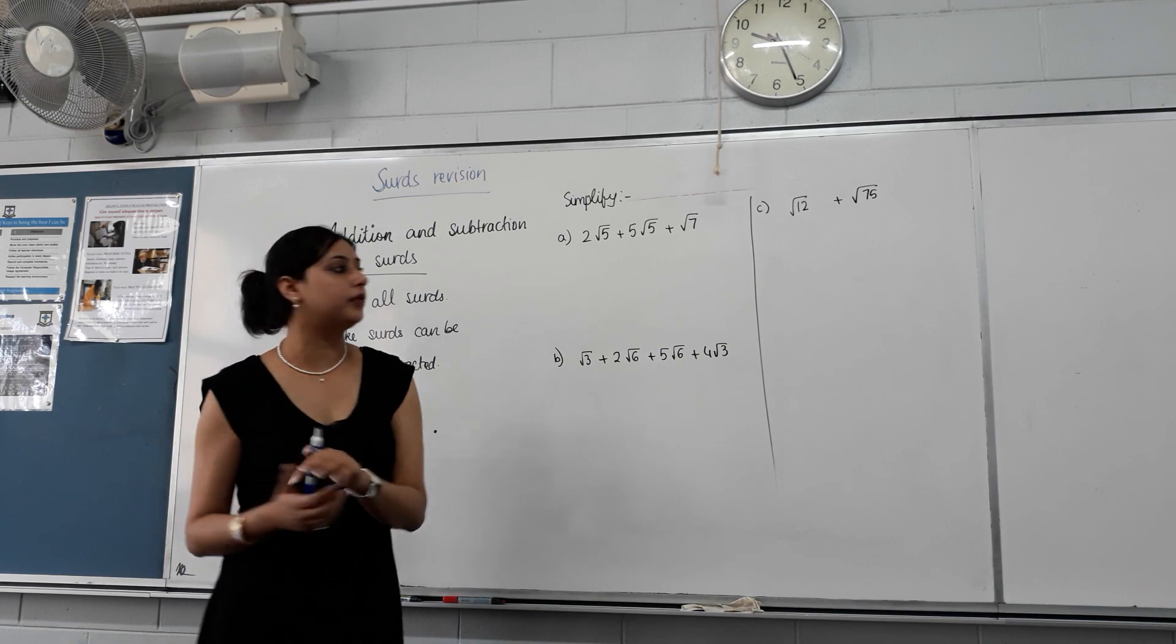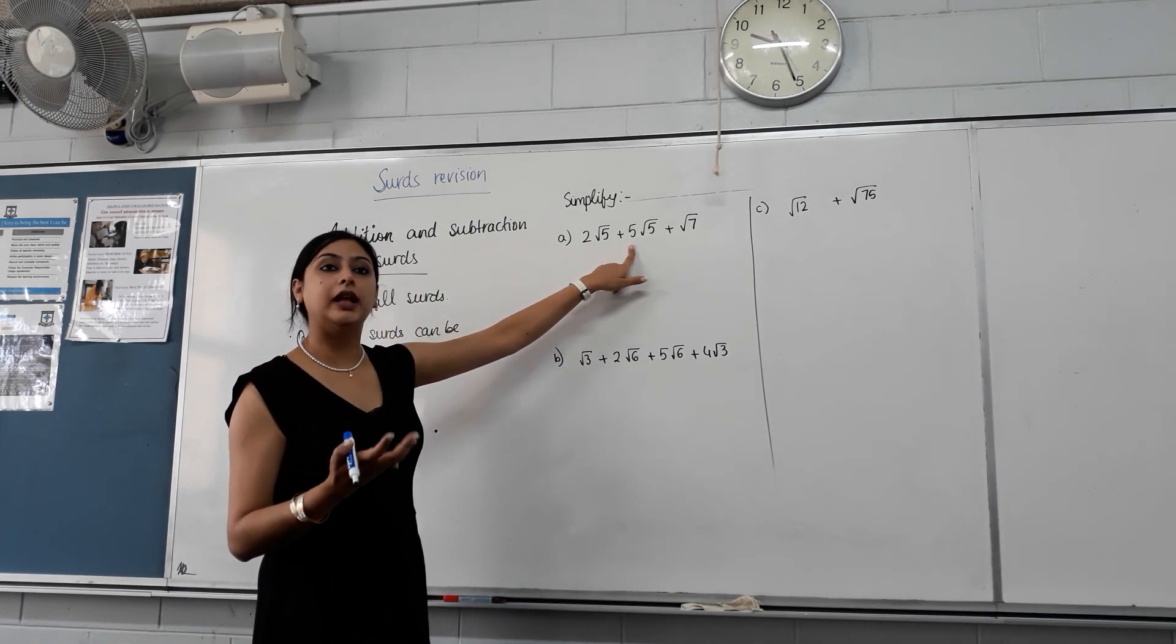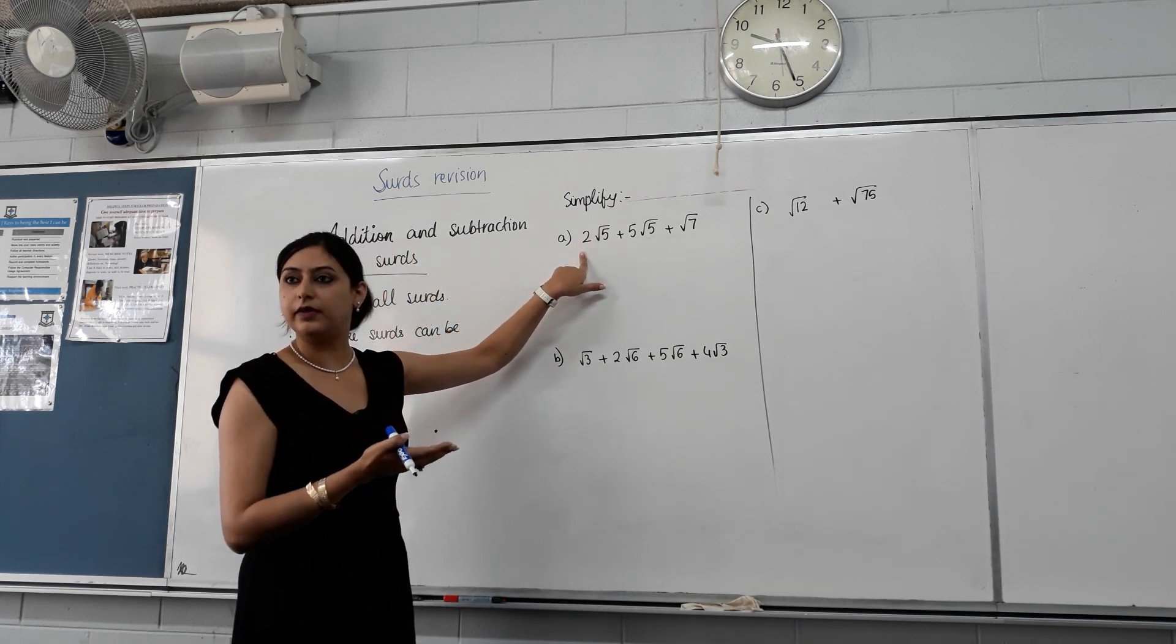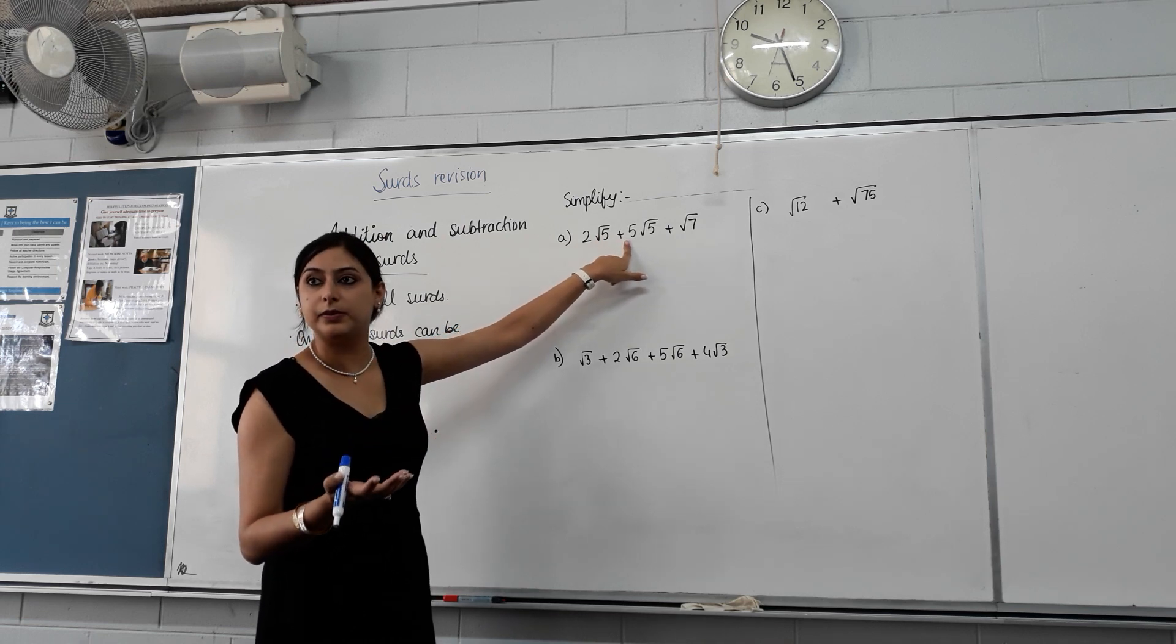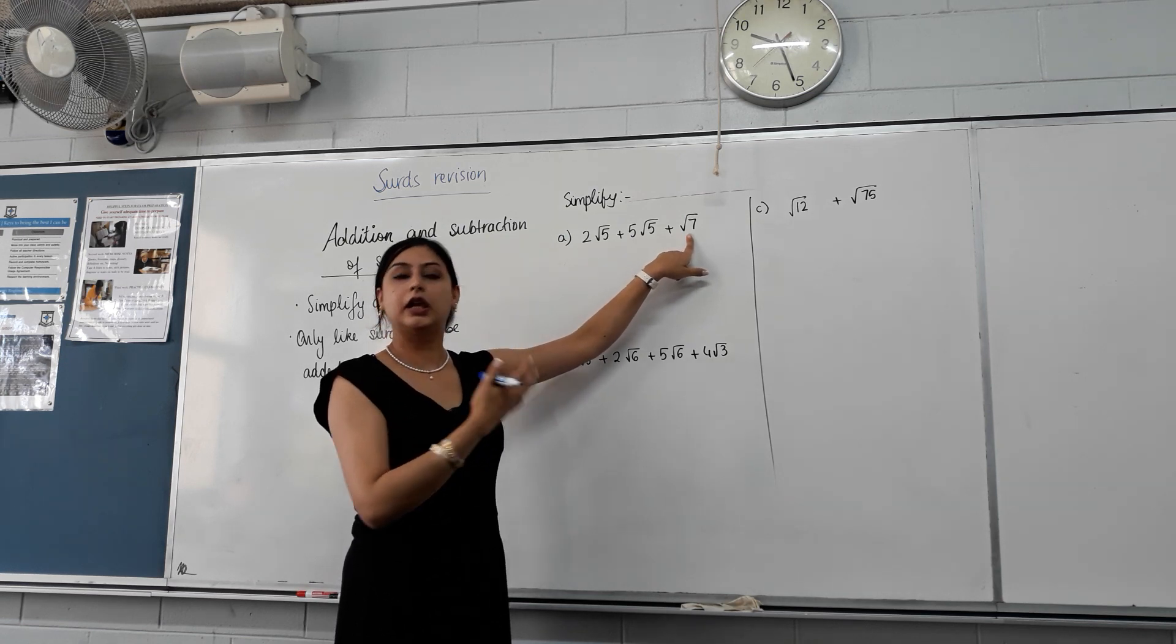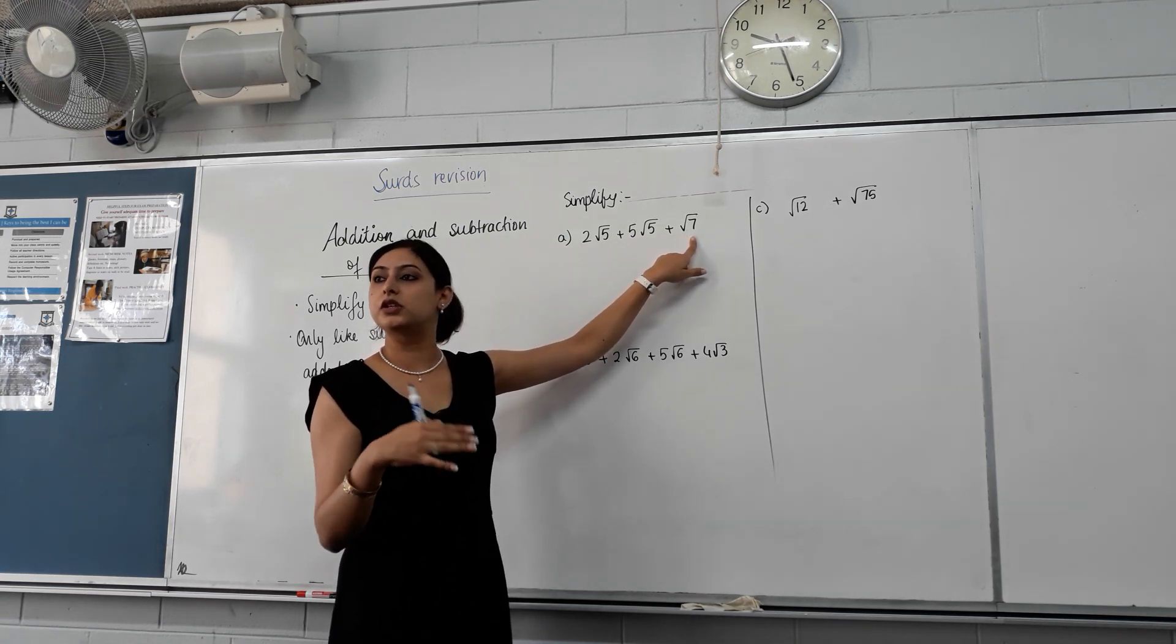That's exactly the same with surds. If I give you two root five and five root five, can you collect them together? So how many root fives do you have? Seven. So it's like apples. You have two apples and five apples, so how many lots of apples do you have? Seven. But if you have an orange there, root seven, that's not like, can you add it? No. And that's how addition and subtraction of surds work.